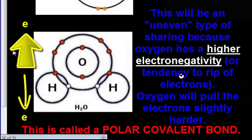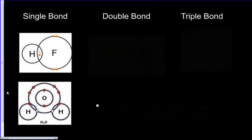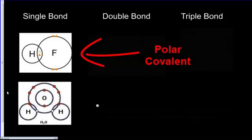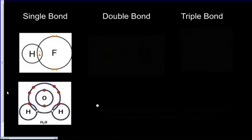We'll talk about polar covalent bonds more in class and even do a lab experiment involving them. HF is also a polar covalent bond because it is uneven sharing — fluorine is a bigger atom with greater electronegativity, which means the ability to attract an electron. Fluorine and oxygen have a higher electronegativity than hydrogen, so they pull in electrons a little harder. This uneven sharing in both H2O and HF is called polar covalent, as opposed to the two hydrogen atoms seen before, which were evenly matched — that's called a nonpolar covalent bond.